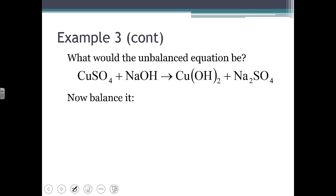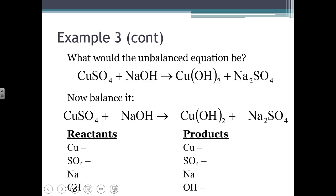So the unbalanced equation would look like this. Now we need to balance it. So we start by doing our counts. Notice that I have sulfate on both the left and the right. I have hydroxide on both the left and the right. It's not breaking apart those polyatomic ions, so I could just count those entire ions together. I don't have to break it up into sulfur and oxygen or into oxygen and hydrogen.